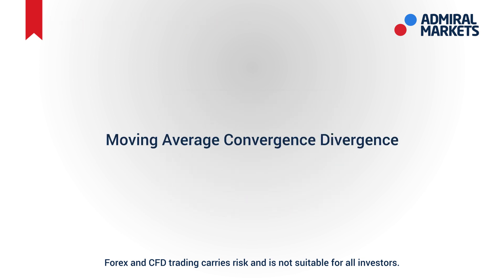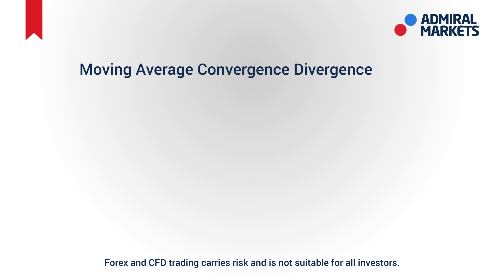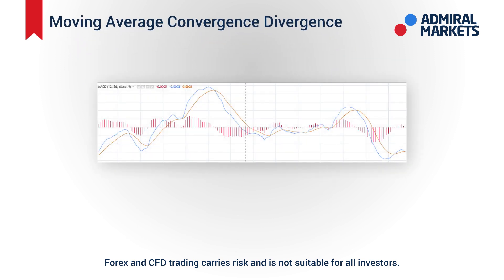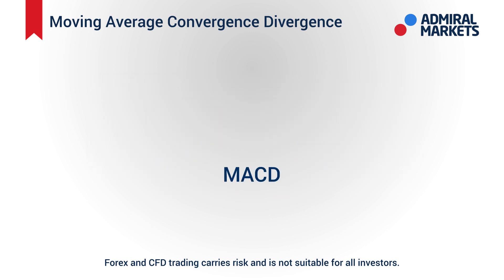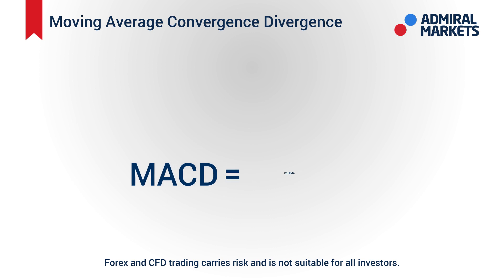The Moving Average Convergence Divergence, or MACD indicator, helps traders identify a new trend and whether it is bearish or bullish. To calculate MACD, you need to subtract the 26-day EMA from the 12-day EMA.